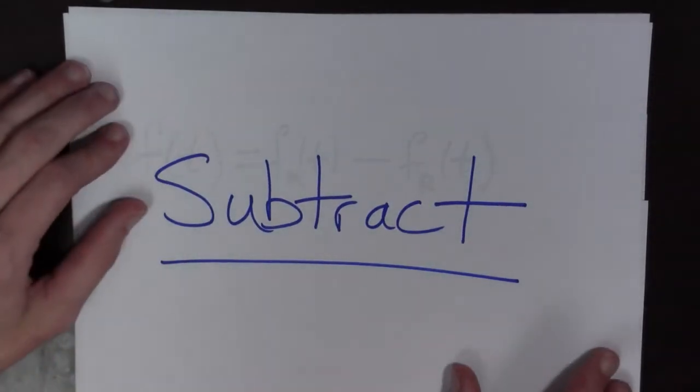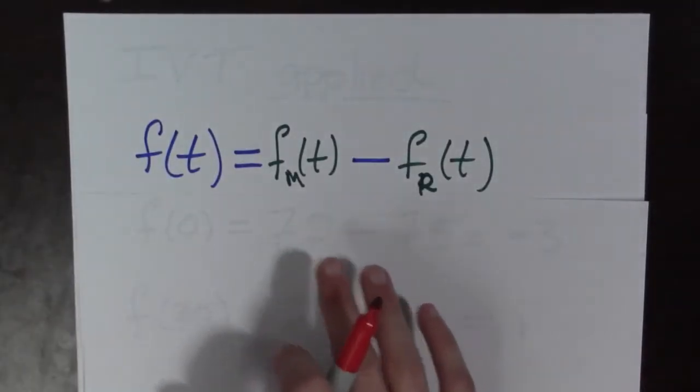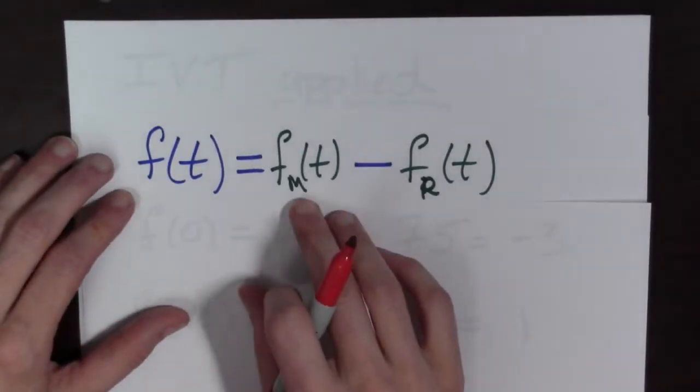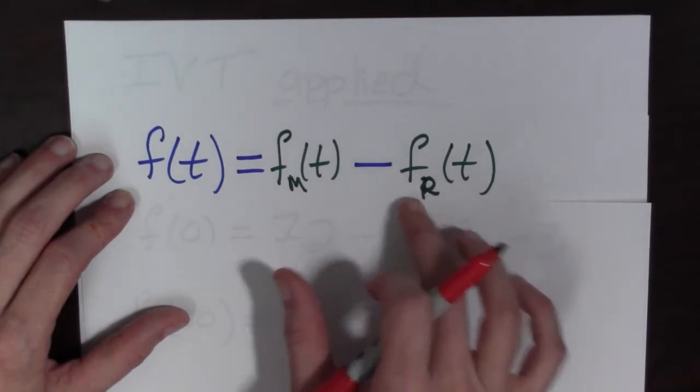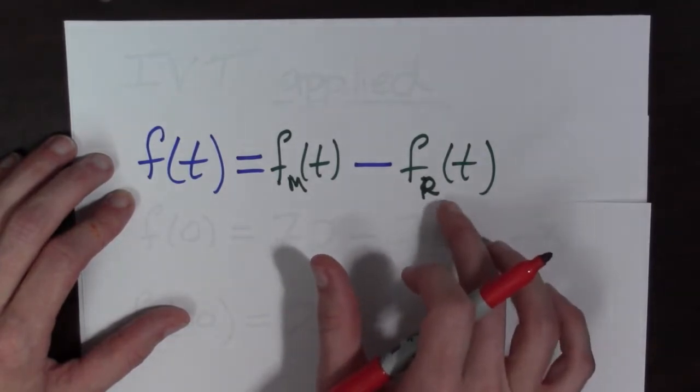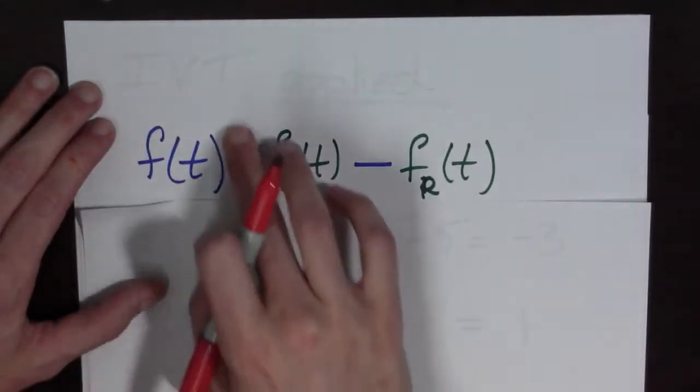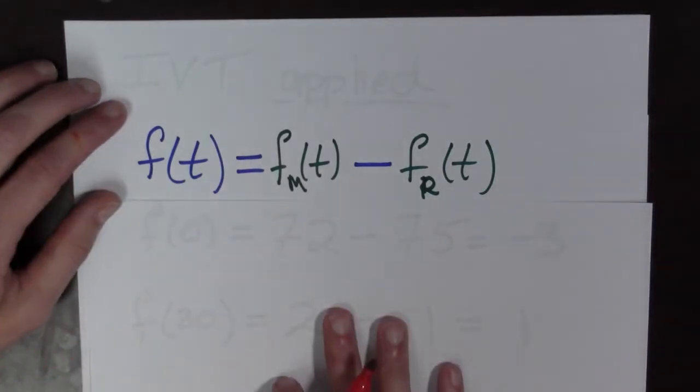And subtract what, you may ask? Well, we're going to subtract the two functions. We have the amount of food that Medical has at time t, we're going to subtract from that the amount of food that Roxy has at time t, and that's going to be our new function f(t).